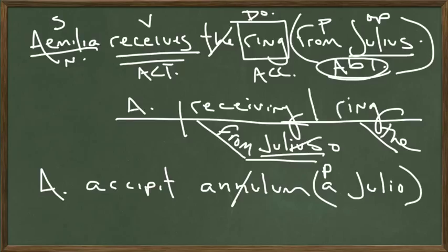This is still slightly bad Latin word order. So at the end of it all, we'll flip it and put it in a better Latin word order. So Amelia anilum accipit will move to the end. Amelia anilum a Julio accipit.